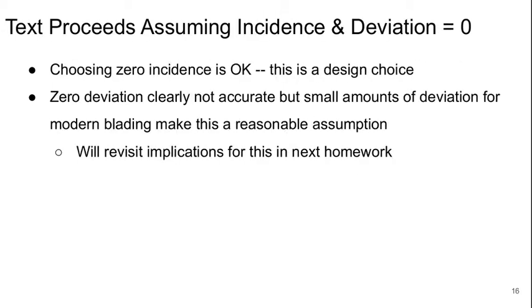So the text proceeds to keep our lives simple by assuming that the incidence and deviation are zero. There's really no simplification associated with choosing the incidence to be zero. This is a design choice and choosing it to be zero is fine. Choosing the deviation to be zero is clearly not accurate, but if the deviation is only 1 or 2 degrees, it's a pretty good assumption for the purpose of simplifying our analysis a little bit. We may revisit the implications of this in an extra problem I might add in an upcoming homework.